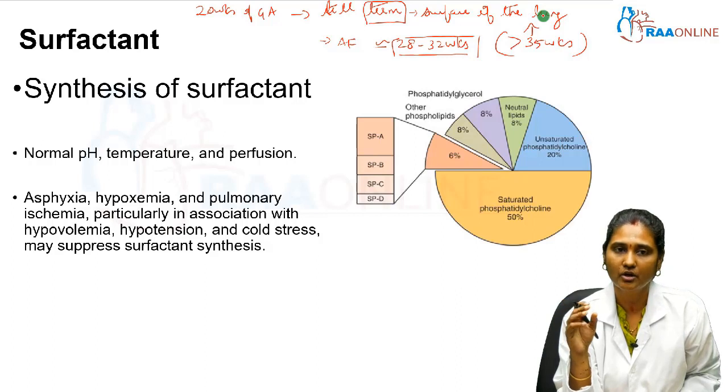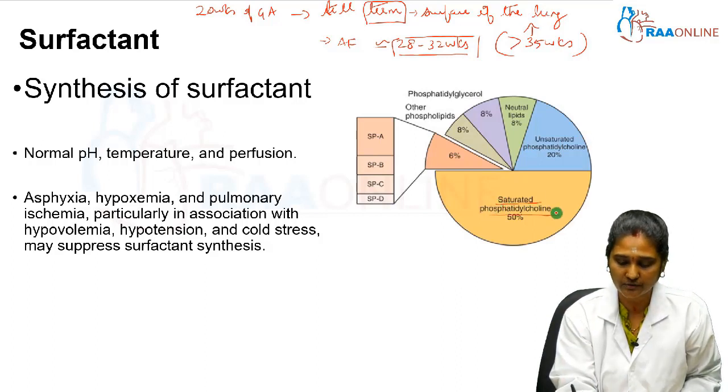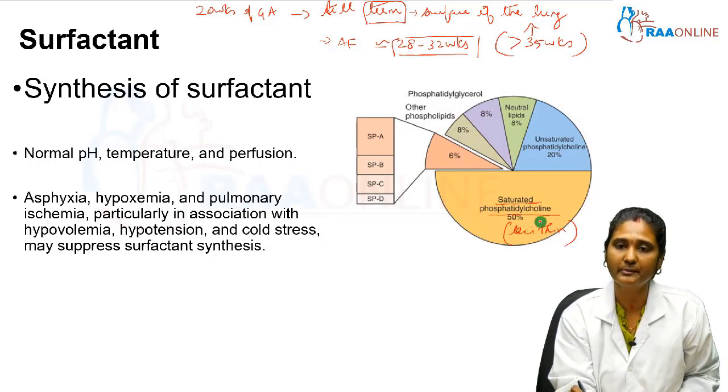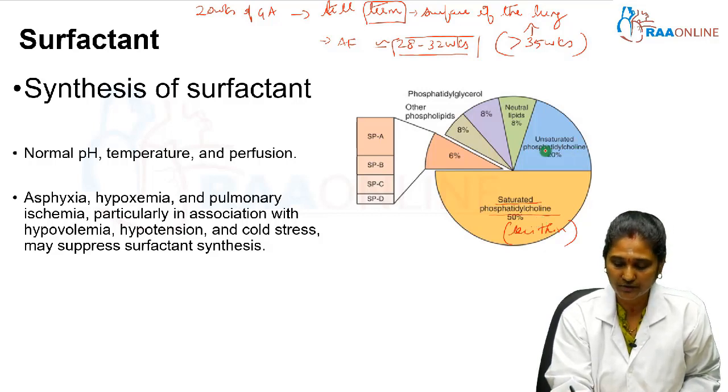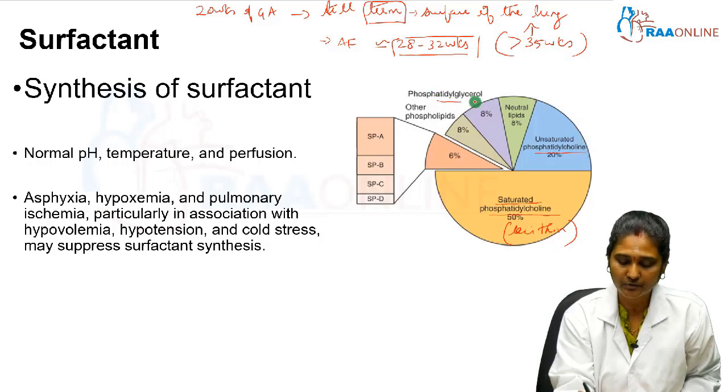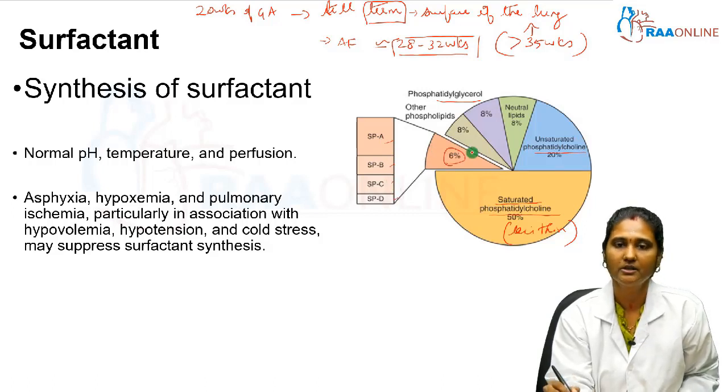The constituent of surfactant: most commonly it is saturated phosphatidylcholine, also called lecithin. Lecithin contributes almost 50 percent of the surfactant composition. The rest are phosphatidylcholine, other phosphatidylglycerols or phospholipids, and the surfactant proteins A, B, C, and D. These constitute around 6 percent. This is the composition of surfactant.